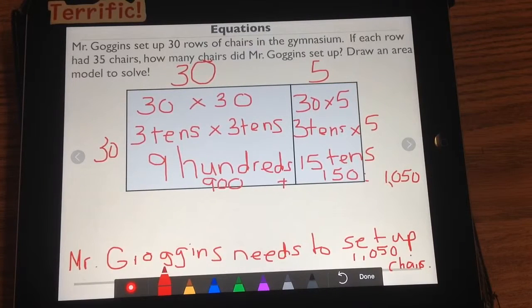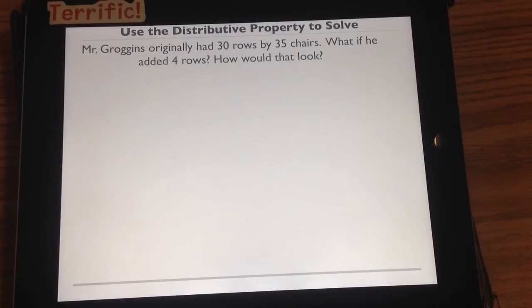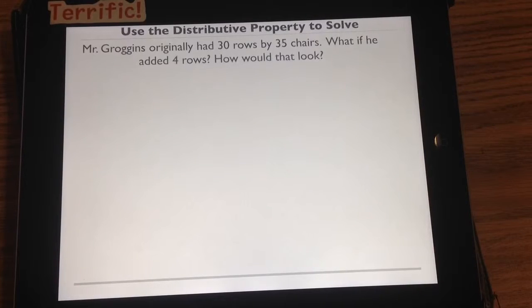If I were to do this another way, I could use the distributive property. And my friends, that is what we are working on next. So here we have Mr. Groggins, who originally had 30 rows by 35 chairs. We're now going to add in 4 rows. How would that look? Go ahead and take a peek in your brain and see if you can figure out what that area model looks like.